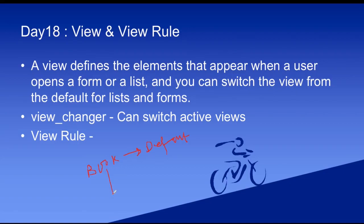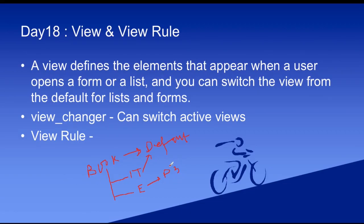For example, this book table can be accessed by the ITIL user and can also be accessed by the end user — so two types of people can access it. IT people will be able to see all the fields under this default view, and then we'll create another view called end user view or portal view. In this portal view, only two or three fields will be added, so in the backend all fields will be there, but the end user will be able to see only minimum fields.